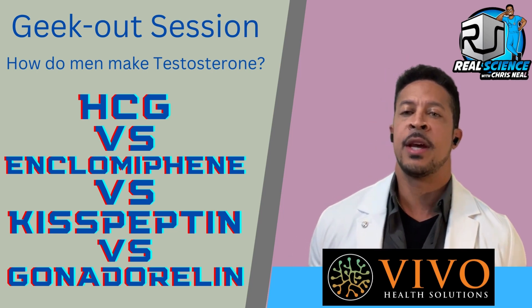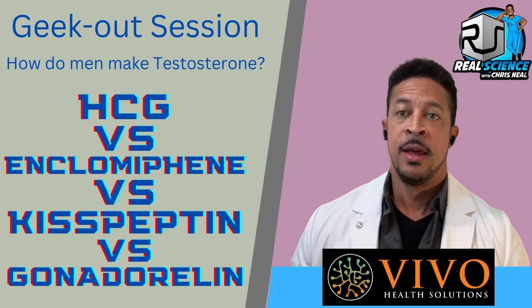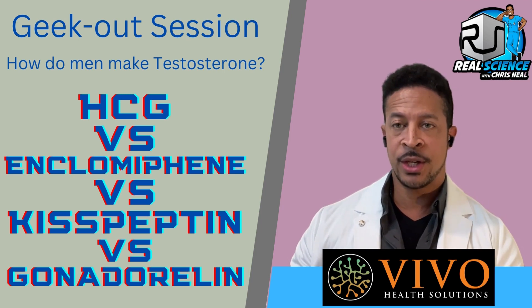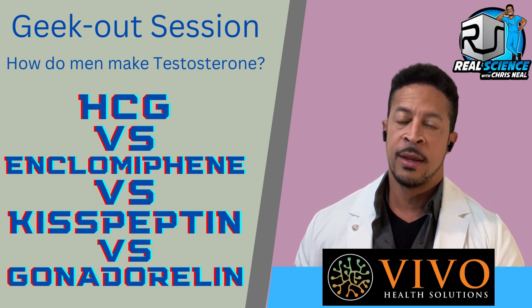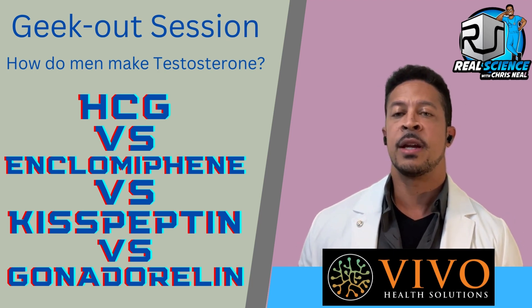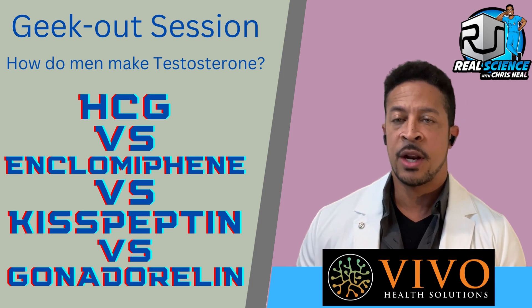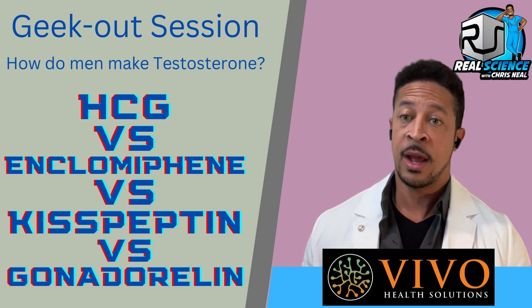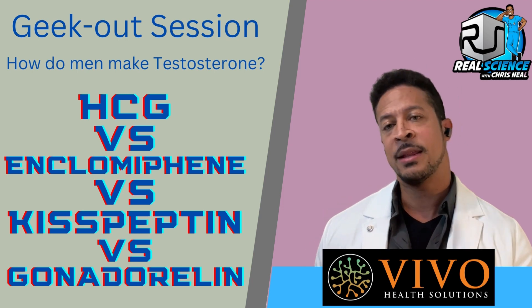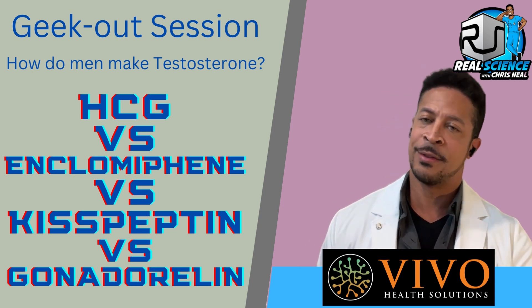Welcome back to another Geek Out session with Real Science with Chris Neal. This session is all about the differences between HCG, Inclomiphene, Kisspeptin, and Gonadorellin. Those are four very common medications that are used during TRT. If you like this content and would like to see more, please hit the like and subscribe button. Thanks a lot. Stay healthy.